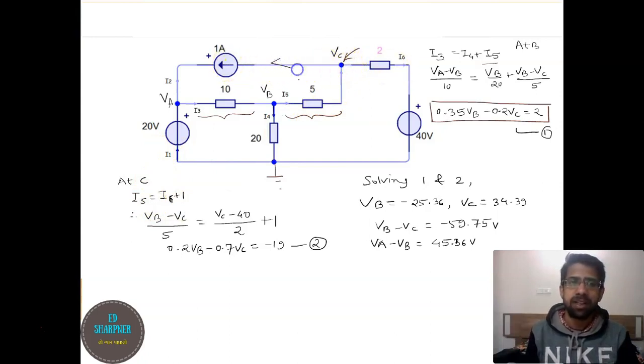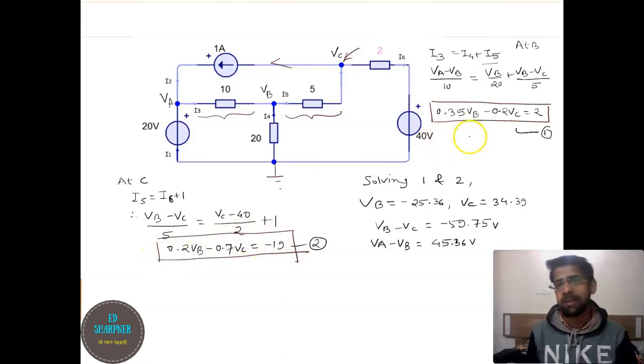Expressing I5 as VB minus VC upon 5 and I6 as VC minus 40 divided by 2 ohms plus 1, we will get another equation in VB and VC. If you solve these two simultaneous equations, we will have value of VB as this and VC as this.